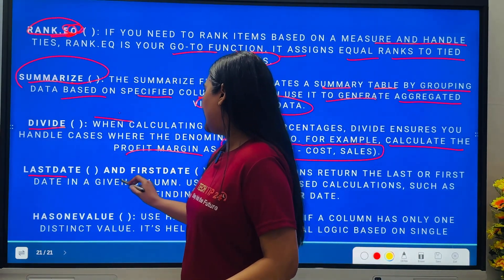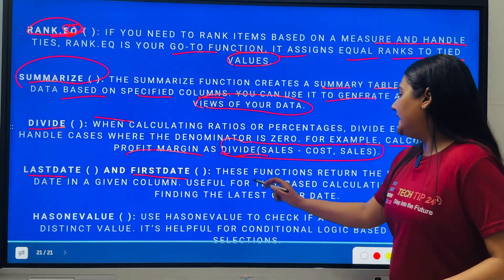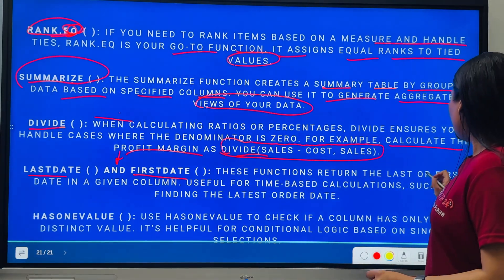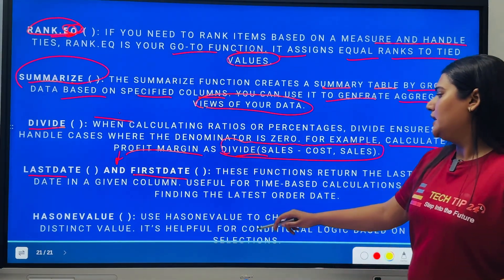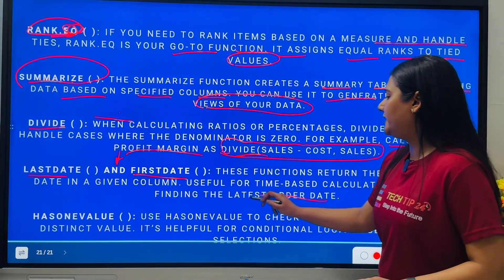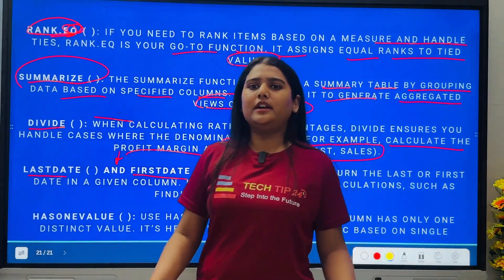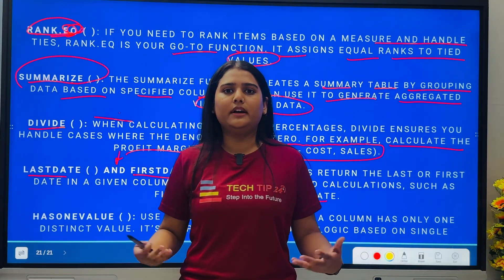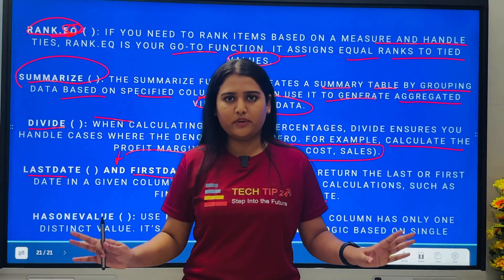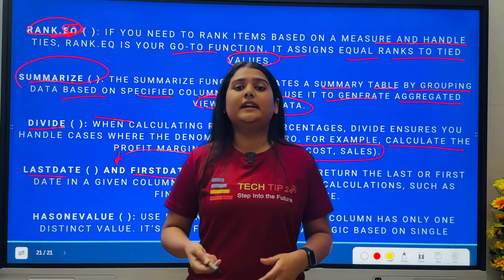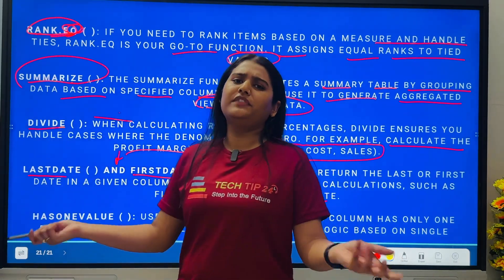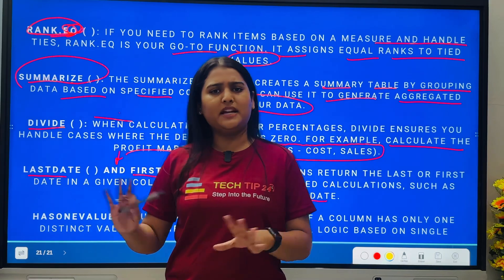Then we have LASTDATE and FIRSTDATE — these come under date and time intelligence functions. They return the last or first date in a given column, useful for time-based calculations such as finding the latest order date. If you're working with e-commerce data and have an order date or ship date column, you can simply use LASTDATE or FIRSTDATE and select the date column to find the first or last date value.